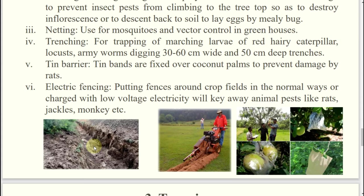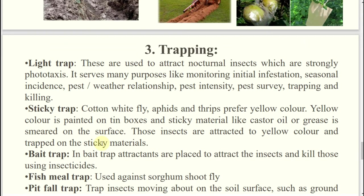Electric fencing may be for human pests or animal pests like rats, jackals, monkeys, foxes — for them you can use electric fencing. Then different types of traps are there — light trap, sticky trap, bait trap, and so many more.